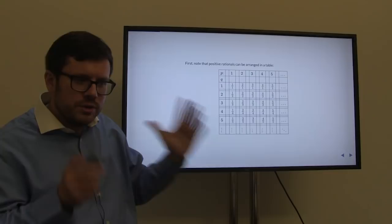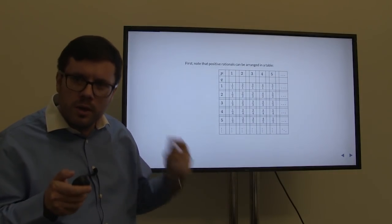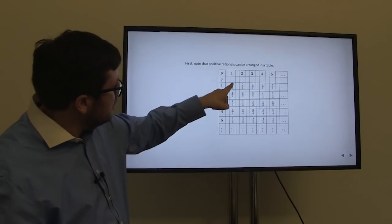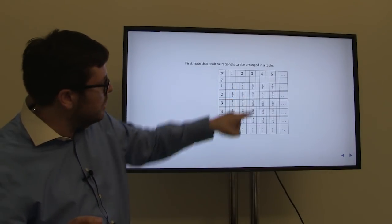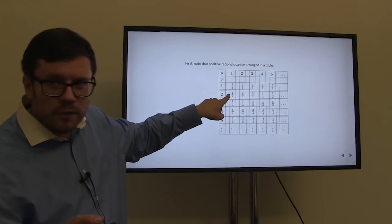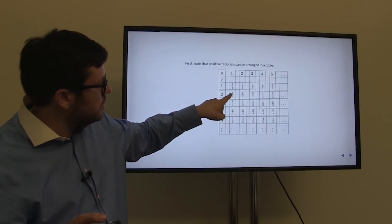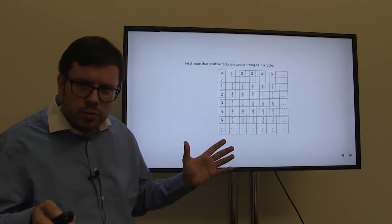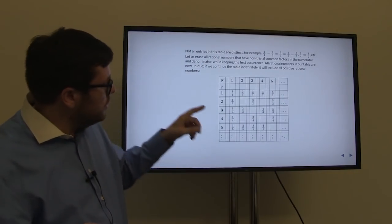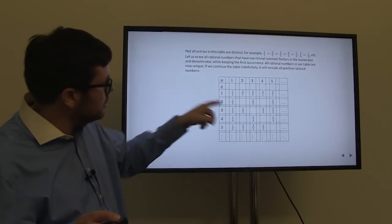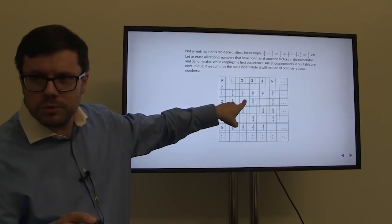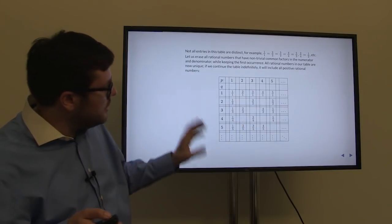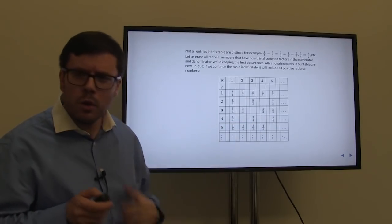We have a problem: for the set to be denumerable it needs to be in one-to-one correspondence with natural numbers, meaning we cannot have any repeats. In this table we do have repeats — 1/1 which is 1, is equal to 2/2; and 2/4 is actually the same as 1/2. As the next step we can remove these duplicates, keeping only the first occurrence of a number. We keep 1 but delete 2/2; we keep 1/2 but delete 2/4. In this way, we have removed all duplicates from the table.